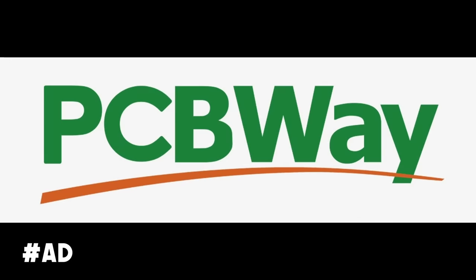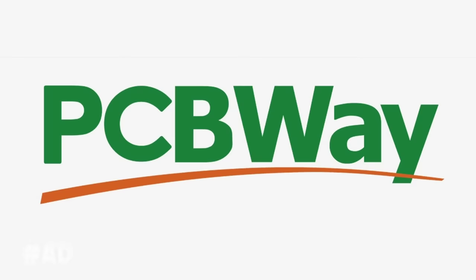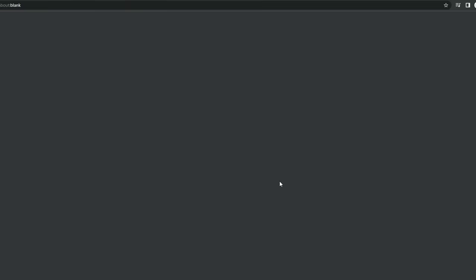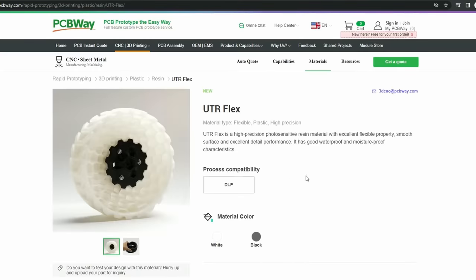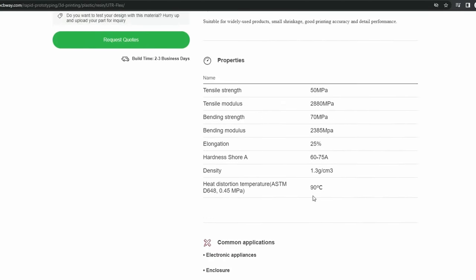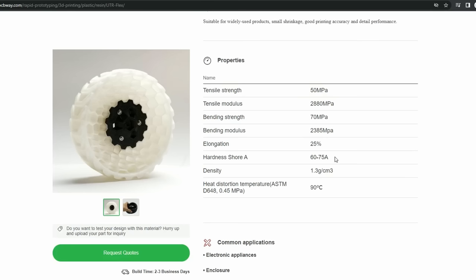Well no it didn't, but today's sponsor is PCBWay who can in fact also print flexible materials for you. Look, flexible resin prints, without having to get into resin yourself. You can see that for this material, as with all materials, the flexible properties are available for you to look at. Here you can see that it's 60-75a shore hardness, which is really soft. This is equivalent to something like Recreus Filer Flex which I just complained about at the beginning of the video.